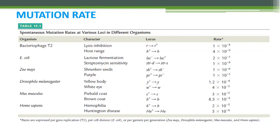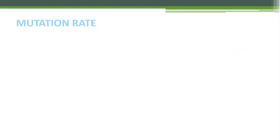The table includes organisms such as bacteriophage T2, E. coli, maize, Drosophila, mouse, and humans, listing their gene loci, traits, and mutation rates. Some DNA sequences appear to be highly susceptible to mutations — these are known as mutation hotspots. Not all parts of the genome of living organisms mutate equally; some parts mutate rather frequently.